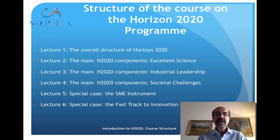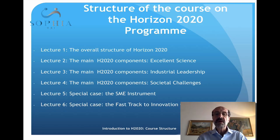The course, as you can see in this slide, is structured into six main lectures. The first one is a presentation of the overall structure of the program. The second one is about the first main component, which is called Excellent Science. As the name says, this one is basically dedicated to long-term research and therefore it's meant for universities and research centers.